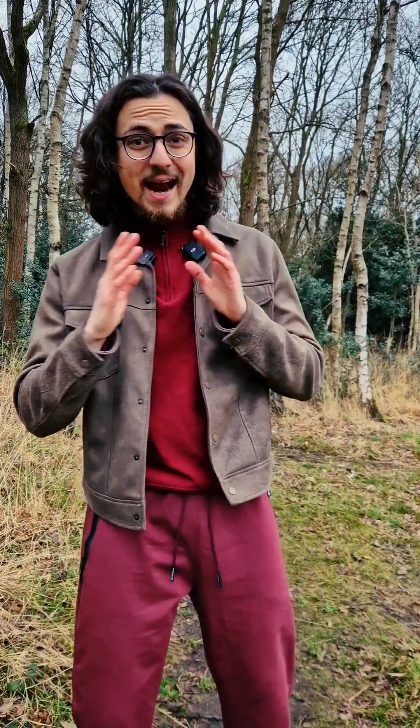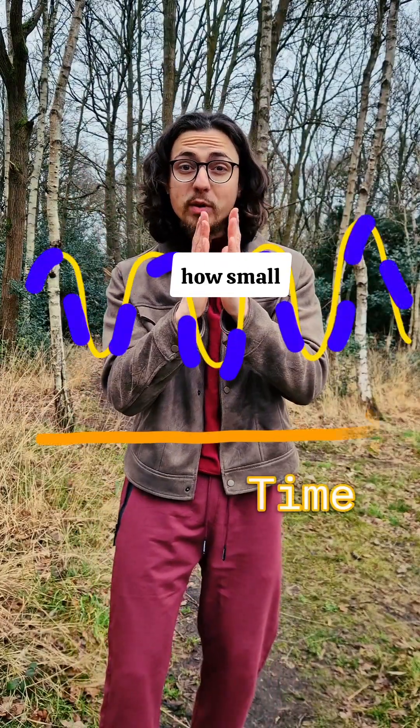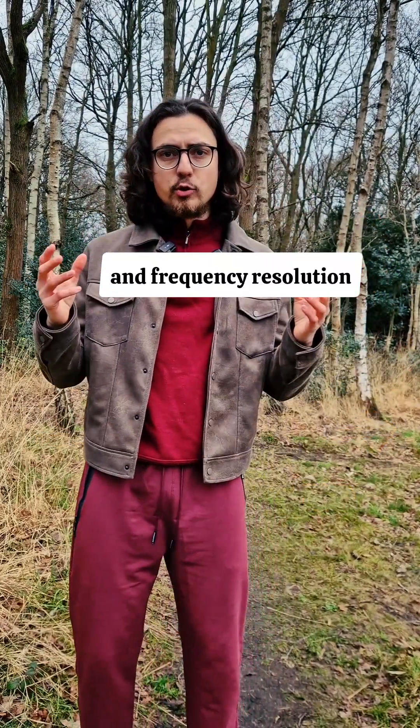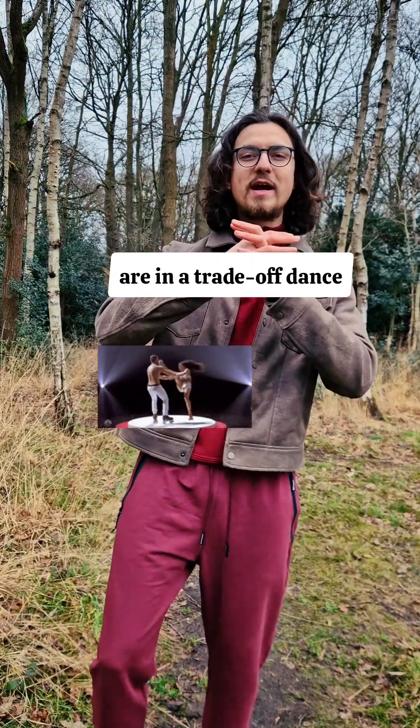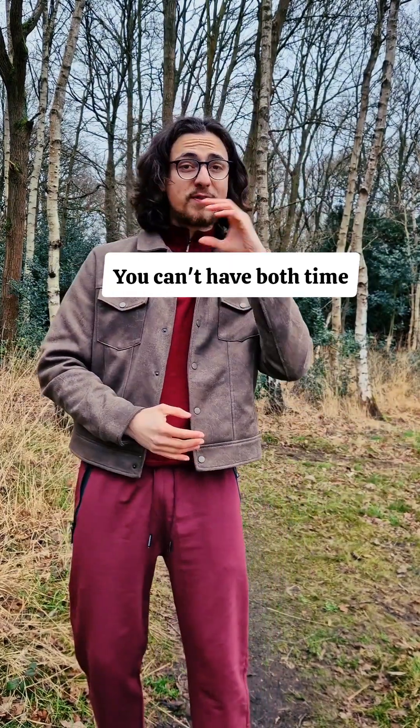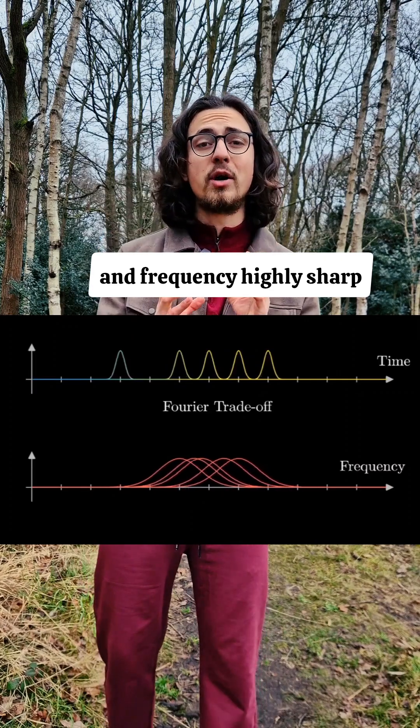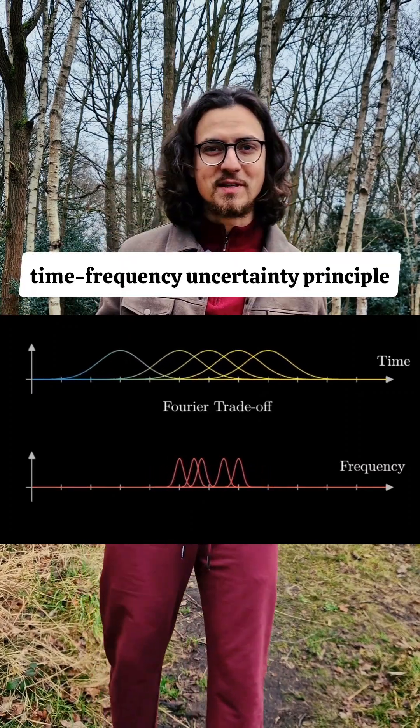But there's a catch. Time resolution, so how small we can divide the signal in time, and frequency resolution, so how precisely we can detect frequencies, are in a trade-off dance. You can't have both time and frequency highly sharp. That's the time frequency uncertainty principle.